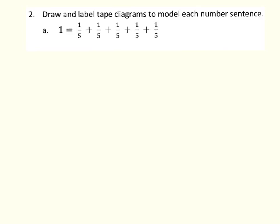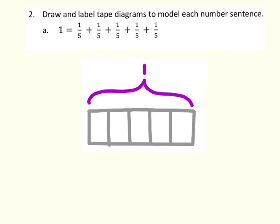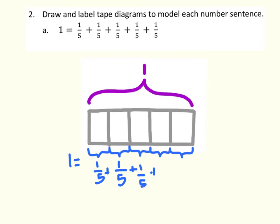Here's our tape diagram — as you can see, it's divided into five sections. To label it: it equals one, so we'll put that on this side. We need to show what each section equals, so we put one fifth, plus one fifth, plus one fifth, plus one fifth, plus one fifth. We have five sections of one fifth and that equals one. And there's our tape diagram.